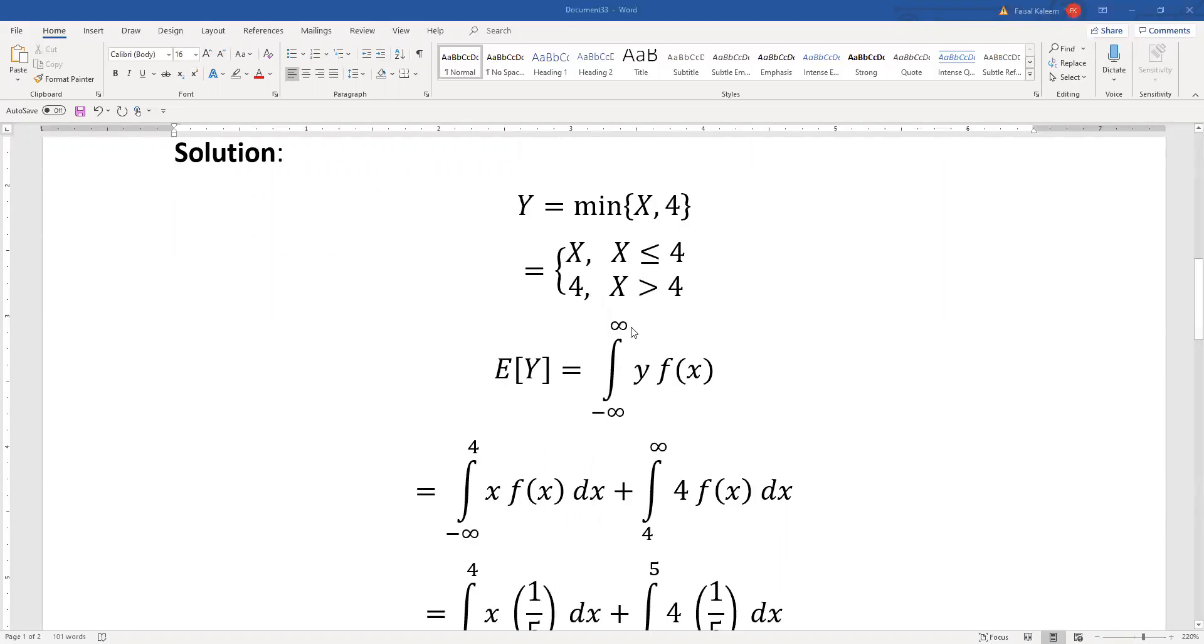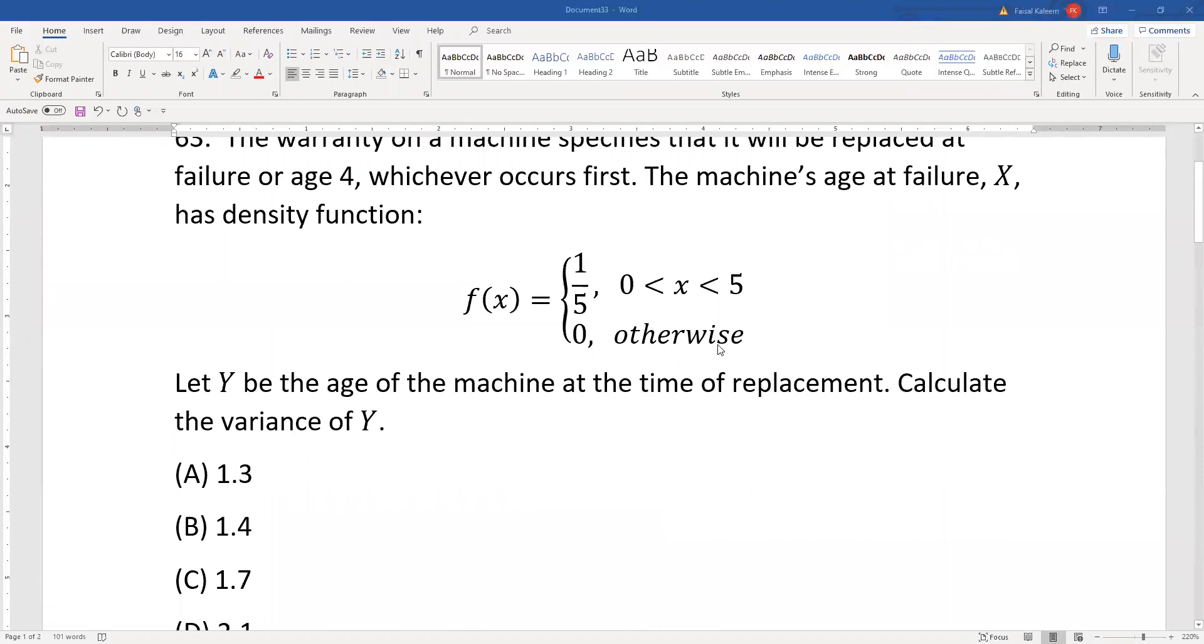In that part, y is equal to 4, so it gets replaced with 4. Now, since x is only defined for 0 to 5, negative infinity to 4 effectively means 0 to 4 because there is nothing before 0.